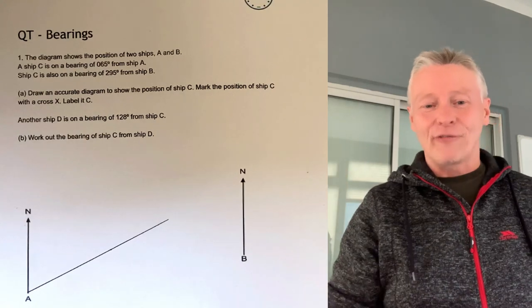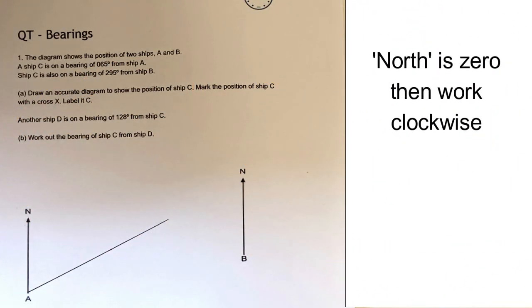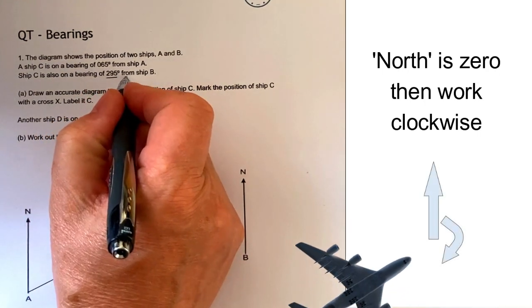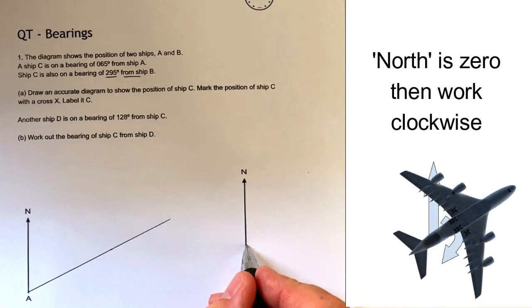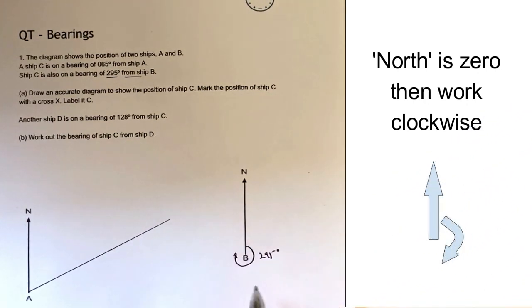Ship C can also be seen from ship B, and this particular case is a bearing of 295 degrees. So in other words, what they want us to do is to measure 295 degrees from the north all the way around.